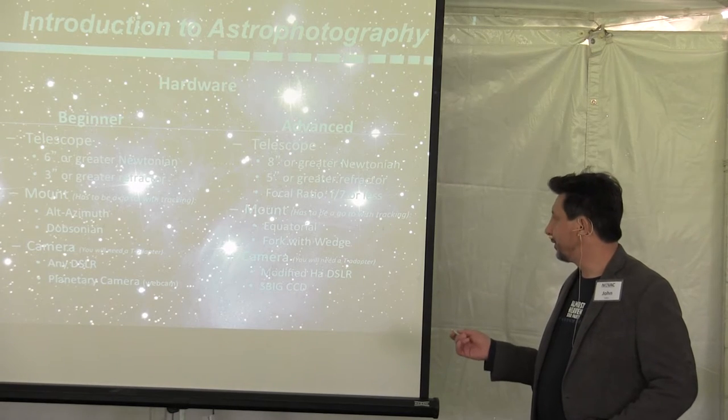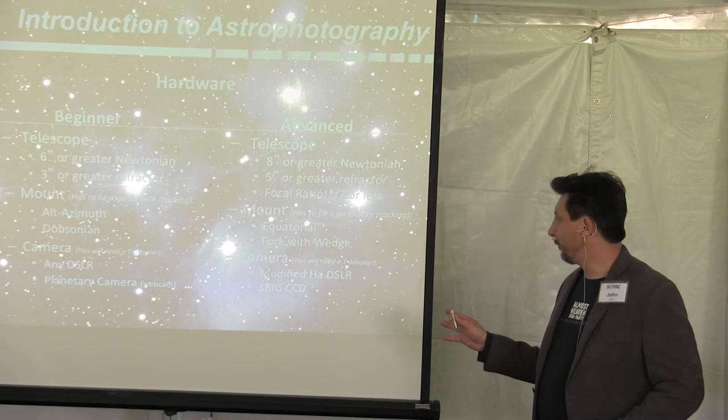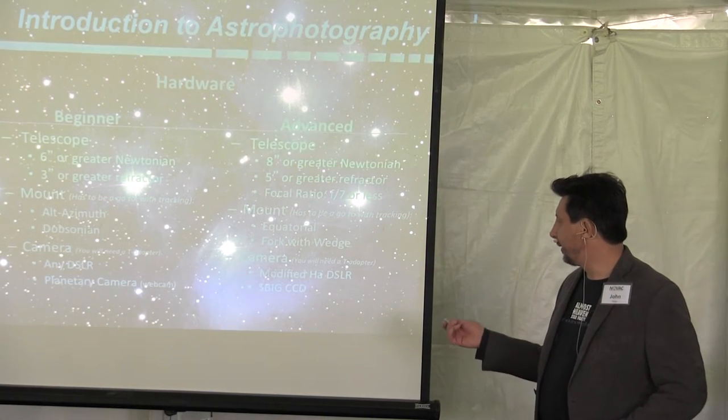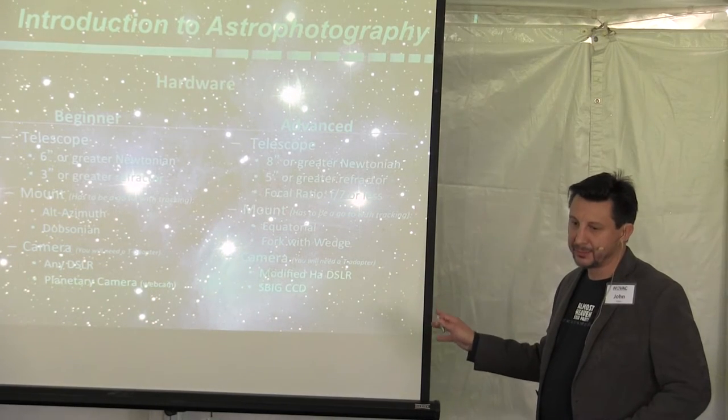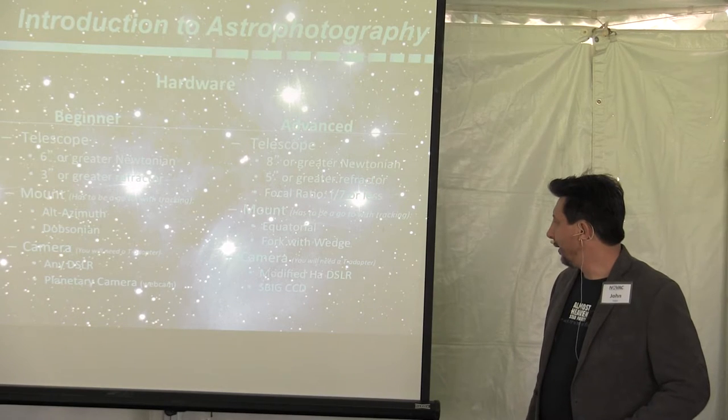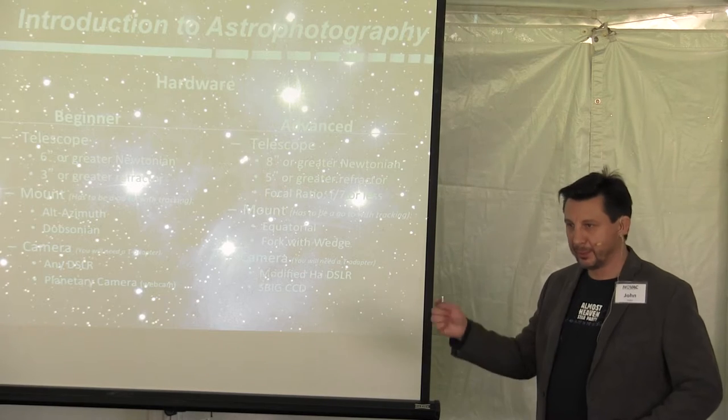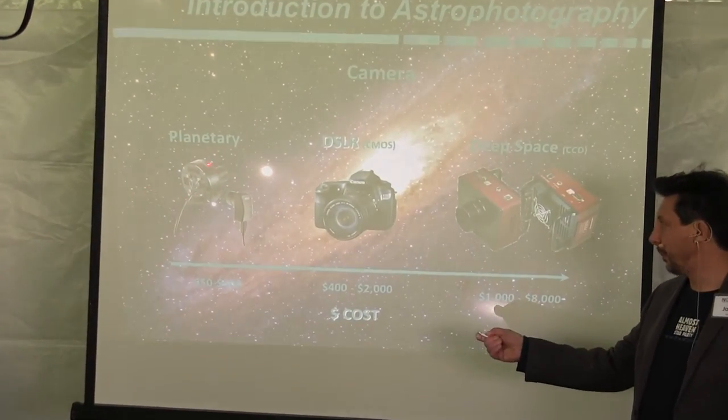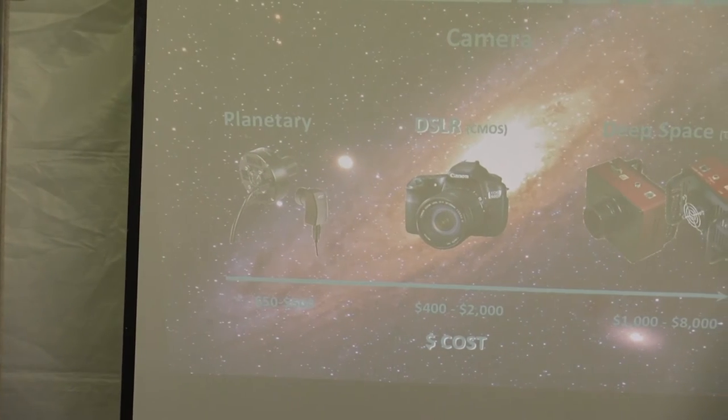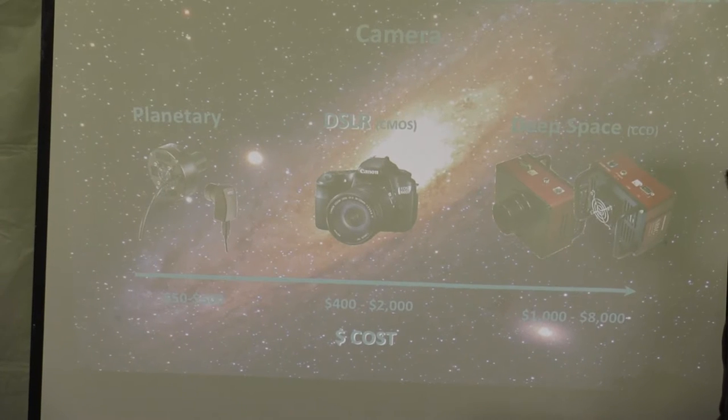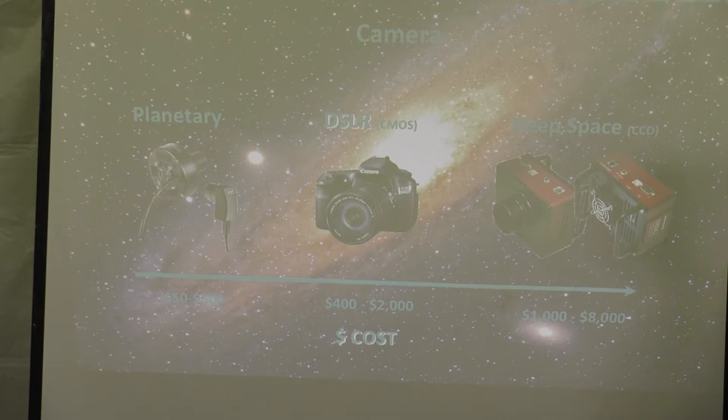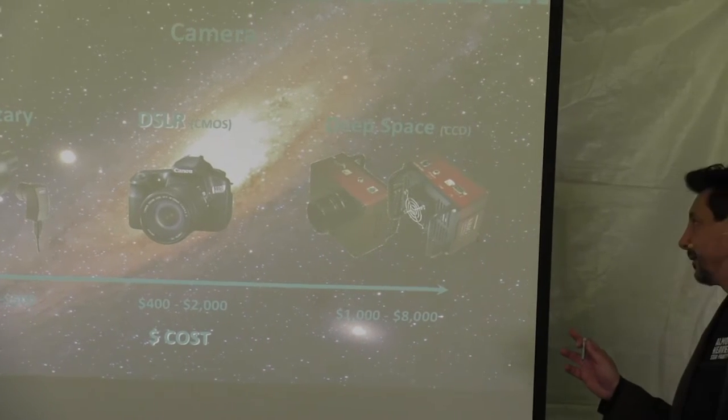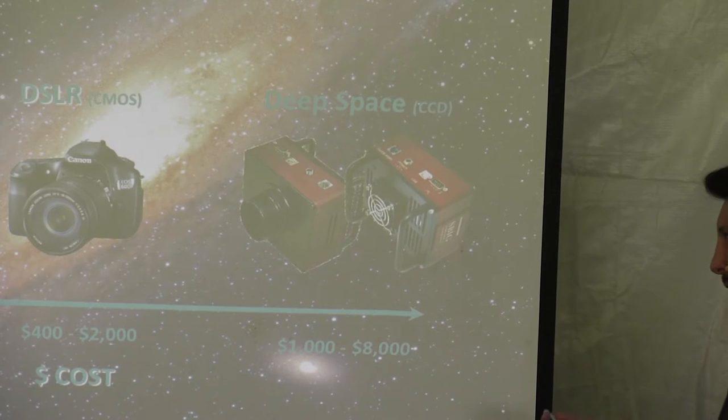Once you go to more advanced, you're going to want an 8-inch or greater Newtonian to really get some detail, a 5-inch or greater refractor. You want a focal ratio that's F7 or less. That's important, because if it's F8, F9, it's better for magnification, but you have to image for a longer period of time. For your camera, you're going to want a Hydrogen Alpha DSLR that's modified HA DSLR.